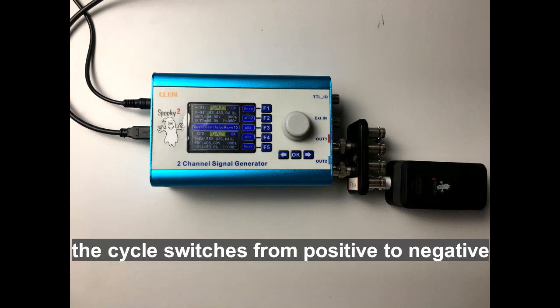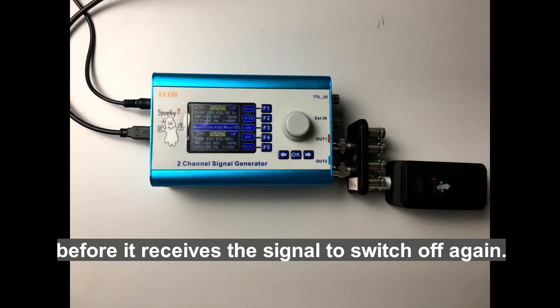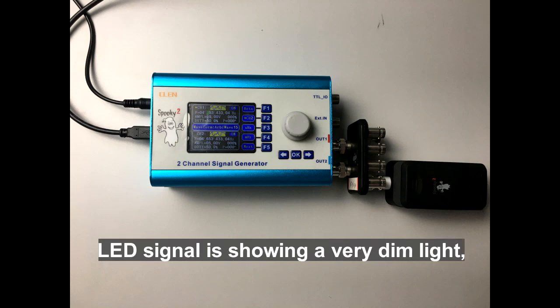With high megahertz frequencies, the cycle switches from positive to negative at a speed too fast for LED lights to switch on fully before it receives the signal to switch off again. Therefore, in these situations, LED signal is showing a very dim light and may even appear to be turned off completely.